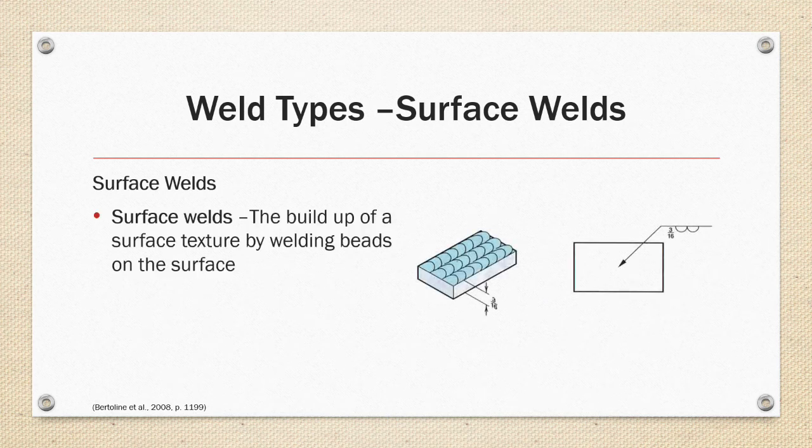Surface welds are the build-up of surface texture by welding beads on the surface. In the case of a surface weld, the welding symbol will point at an entire surface and denote a size and shape of the bead.